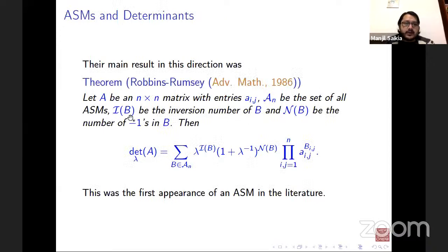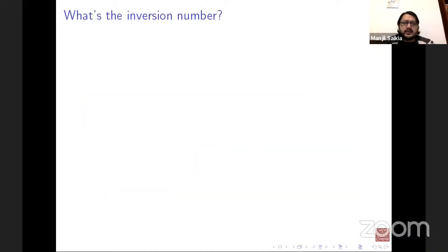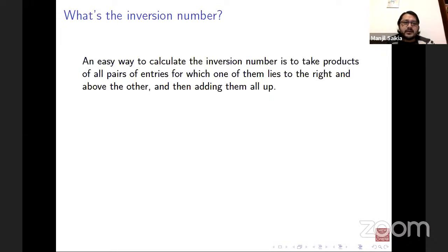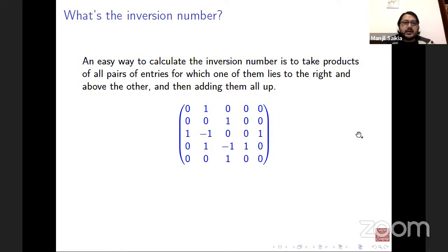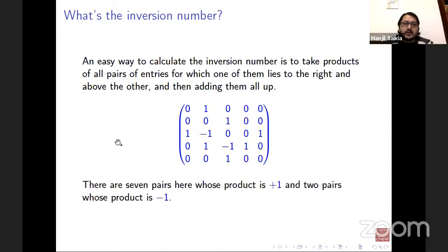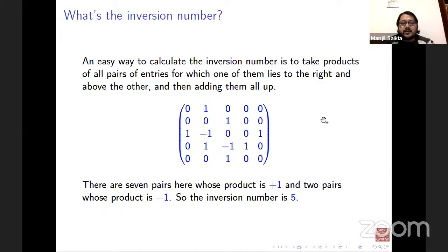The inversion number of an alternating sign matrix can be calculated by taking the product of all pairs of entries where one lies to the right and above the other, then adding them up. For zero entries the product is zero, so only non-zero entries matter. For example, in one matrix there are seven pairs with product plus one and two pairs with product minus one, giving an inversion number of five.